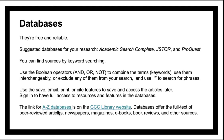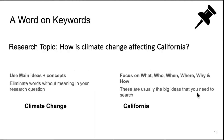The link for A through Z databases is on the GCC Library website. Databases offer full text of peer-reviewed articles, newspapers, magazines, e-books, book reviews, and other sources. A word on keywords: for the research topic 'How is climate change affecting California?', use main ideas and concepts and eliminate words without meaning. The main concept here is climate change. Focus on what, who, when, where, why, and how — these are usually the big ideas you need to search. Here, it's California.